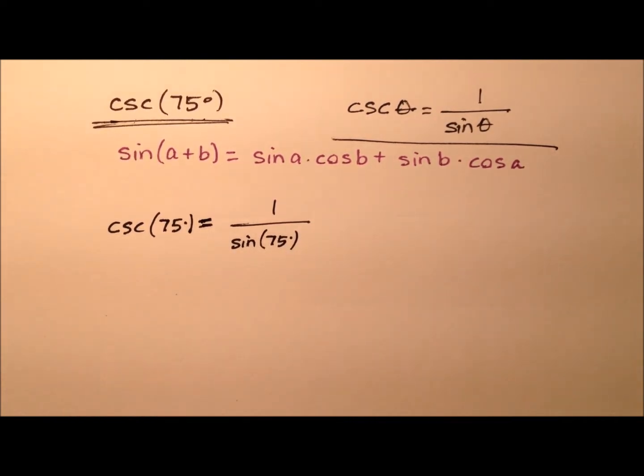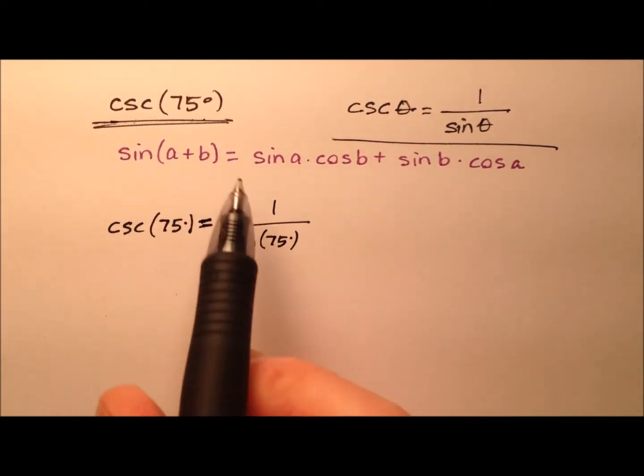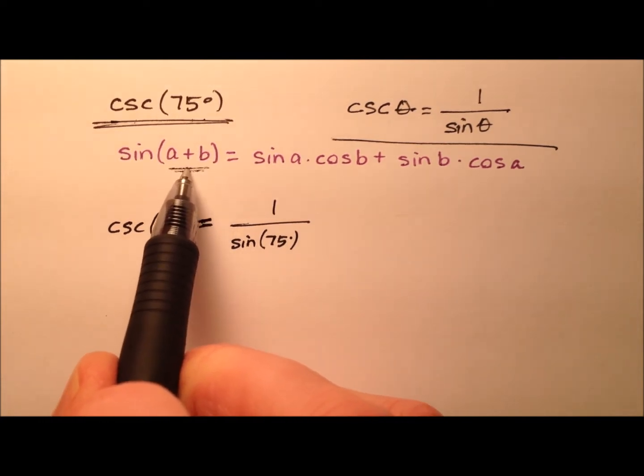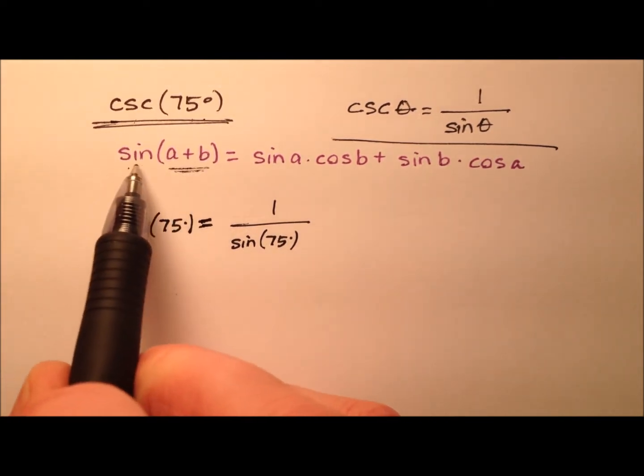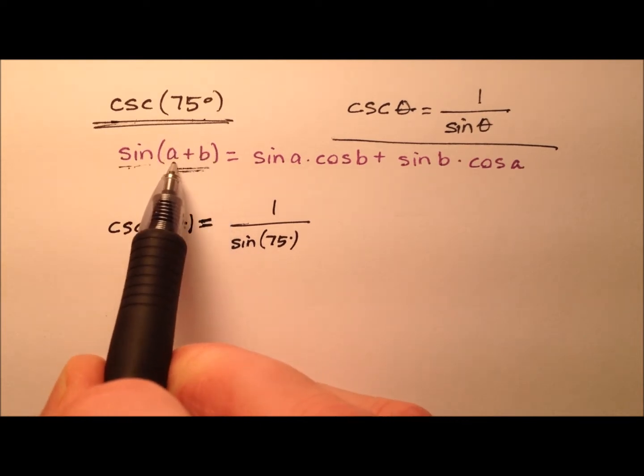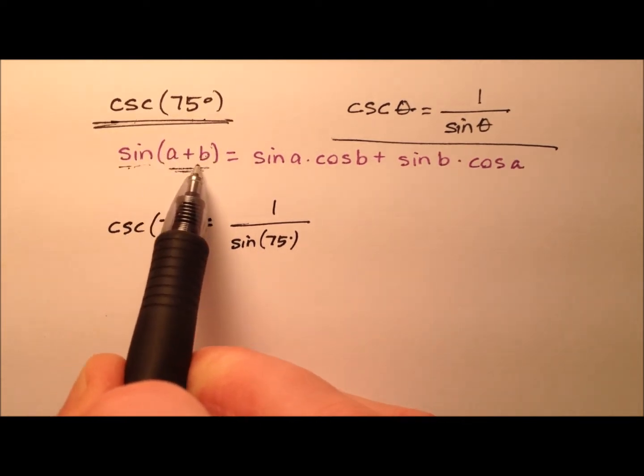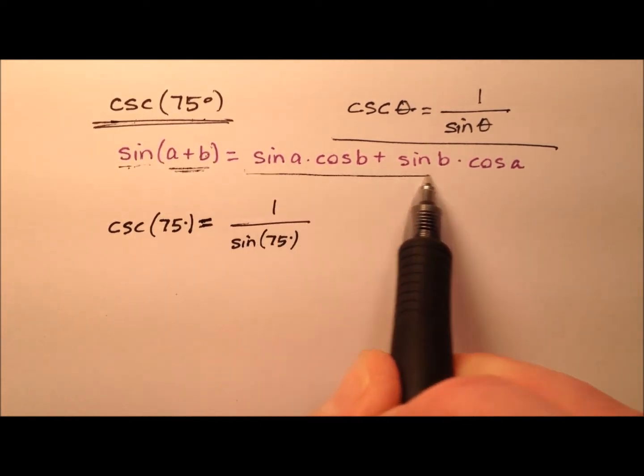For this value of sine for 75, let's use the sum identity for sine, which says the sine of two angles a and b that we're adding together has this expansion.